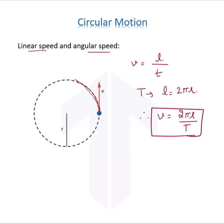Similarly, if we talk about the angular speed which is denoted by omega, that is basically the angular displacement θ upon time.